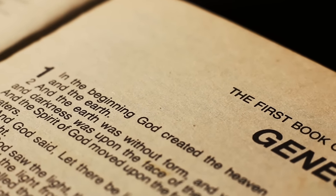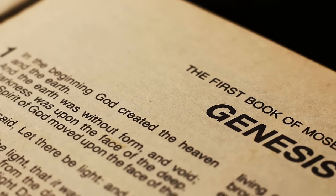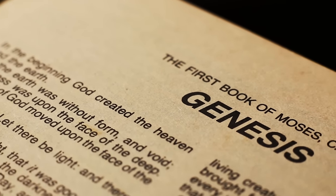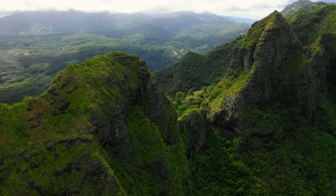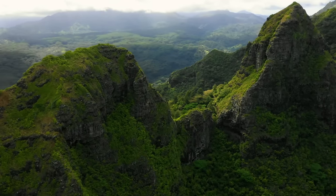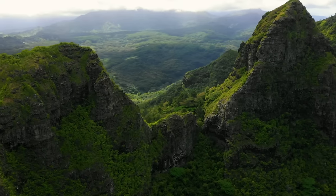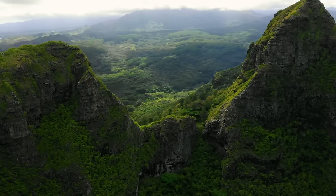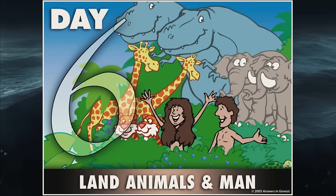What does the Bible record about earth history? We start with creation — in the beginning God created. The earth was initially covered in water, and on day three God made the dry land, put soil on it, and put plants, preparing it for animals and making it a suitable home for man. On day five God made the flying creatures and sea creatures, and on day six he filled the land with land animals and man.